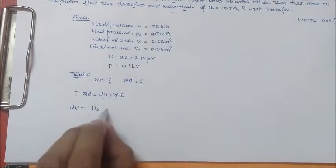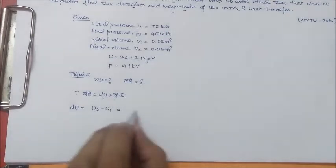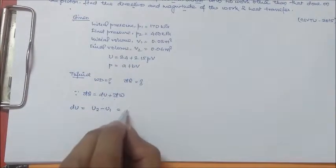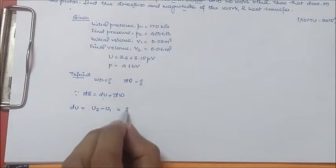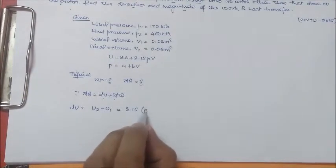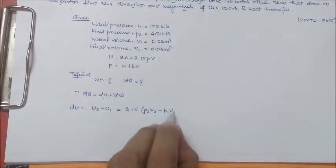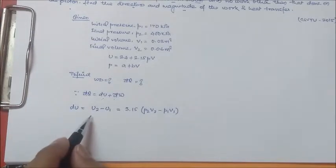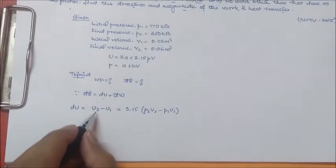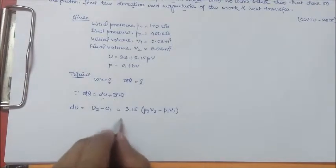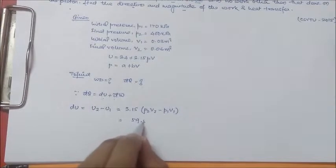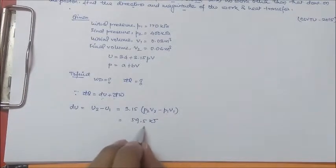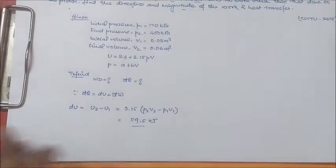So du is what? du is u2 minus u1 as it is a property, exact differential. So u2 minus u1 from this equation is given. u2 minus u1 can be written as 3.15 times (p2 v2 minus p1 v1). We are just for state 1 and state 2 and then we have subtracted the states from 2 to 1. So value comes around 59.5 kilojoule because we know p2, we know v2, we know p1 and v1. We got this now.